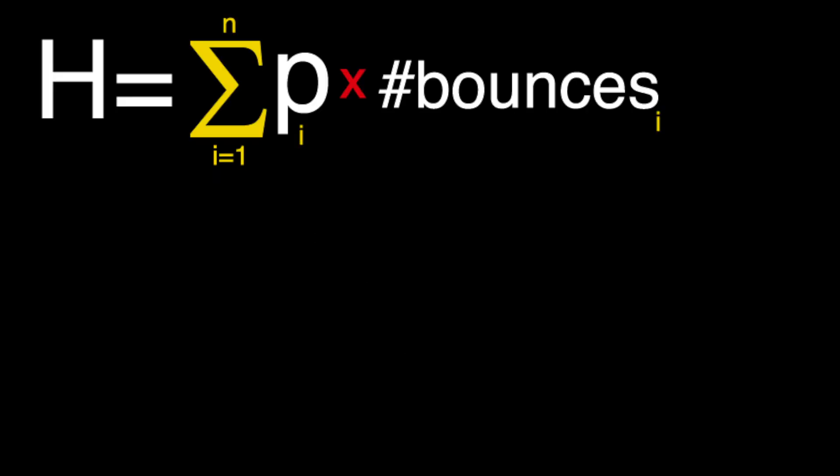And we can arrive at the same result using our bounce analogy. Entropy, or H, is the summation for each symbol of the probability of that symbol times the number of bounces. Now, the difference is how do we express number of bounces in a more general way? And as we've seen, number of bounces depends how far down the tree we are.